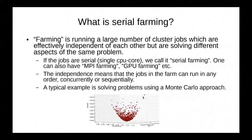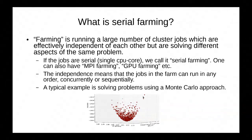So let's start with the introduction. What is serial farming? In this not-so-scientific definition, farming is running a large number of cluster jobs which are effectively independent of each other but are solving different aspects of the same problem. This can be easily expanded to include parallel farming like MPI, GPU, and multi-threaded farming. The independence bit is critical — it means that jobs in a serial farm can run in any order, concurrently or sequentially. This is very important when it comes to scheduling of serial farms.